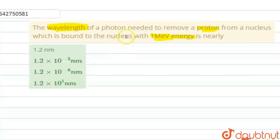These protons are bound to a nucleus with one MeV energy. If this is the energy of that proton bound to the nucleus, how much wavelength is required to remove that energy, to remove that proton?